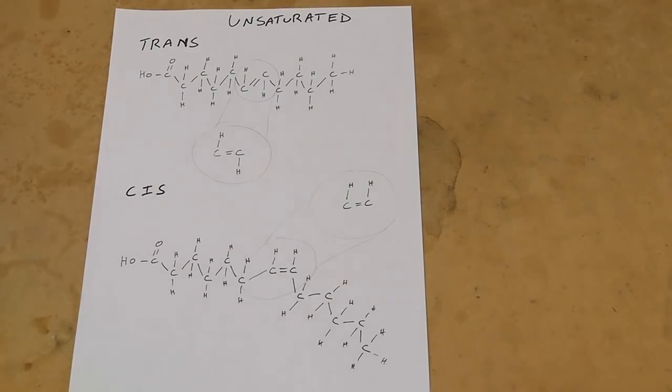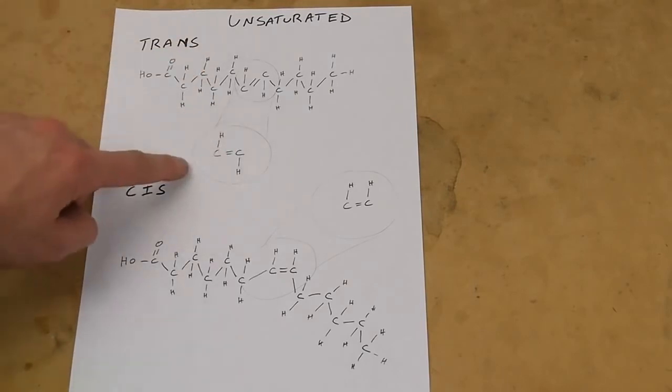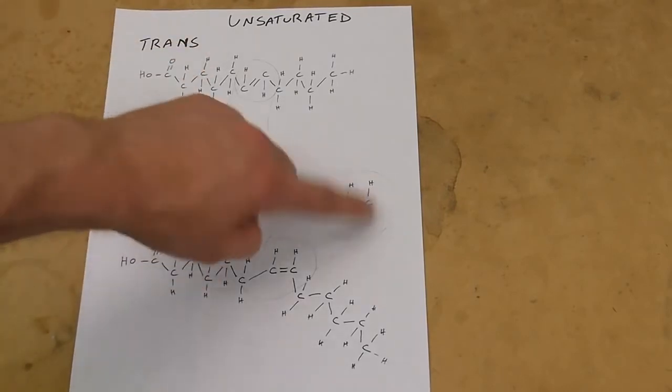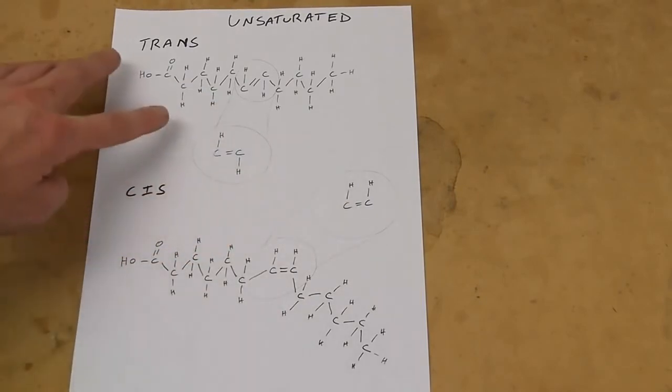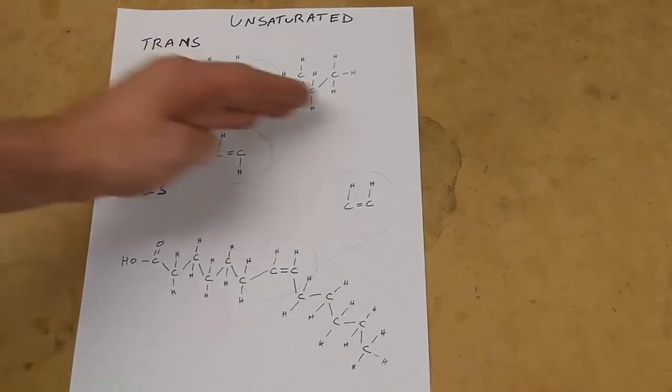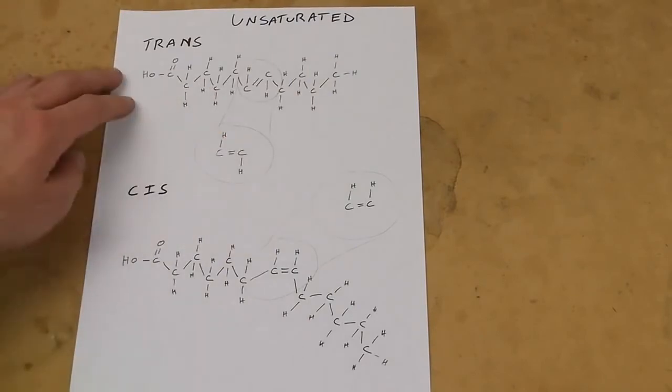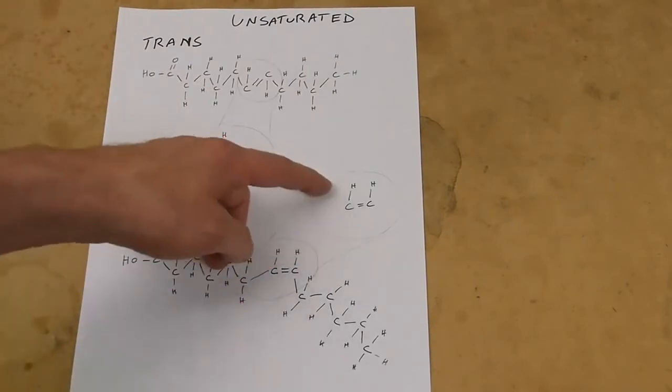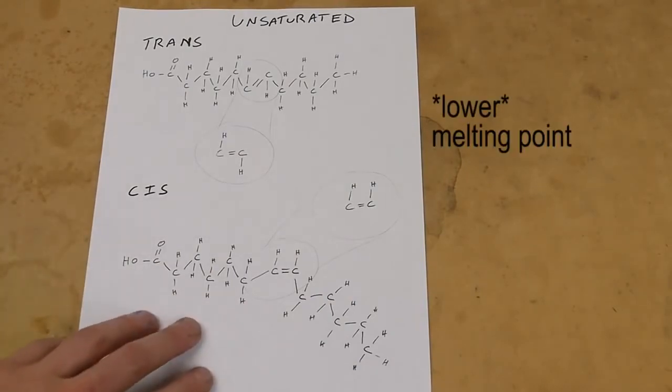When we do this hydrogenation process, there's one or two configurations that can happen. When we're adding hydrogen, we might add hydrogen such that they're on opposite sides of the chain like this, or they might be on the same side of the chain. When they're opposite, this is called a trans fatty acid and it makes the chain kind of straight again. Whereas if the hydrogens are on the same side, we get this kink and all the health benefits of having a higher melting point oil apply.